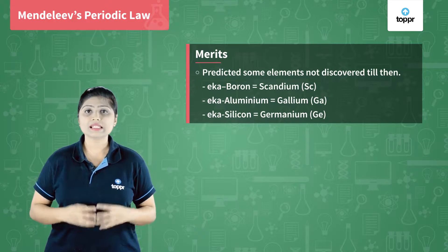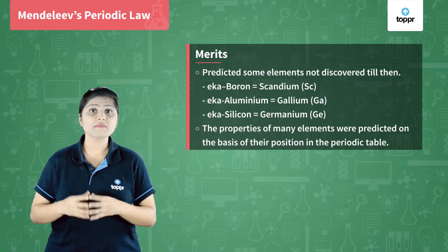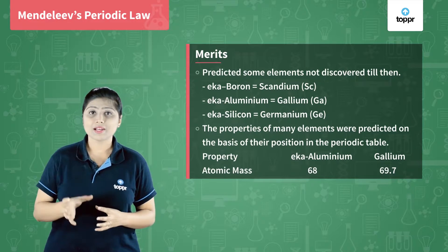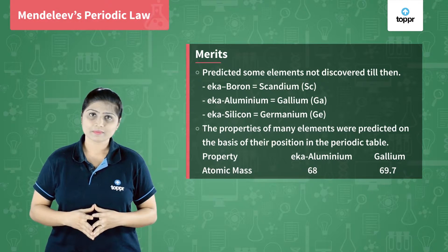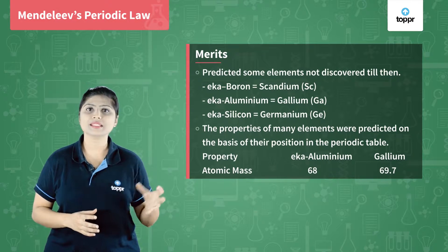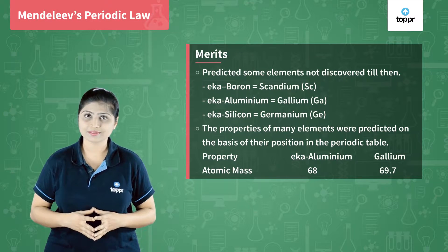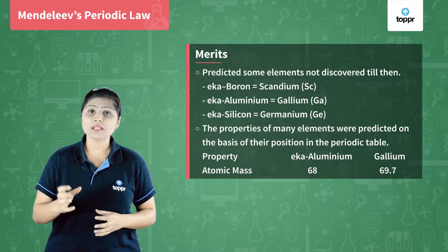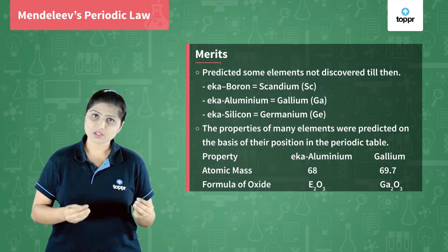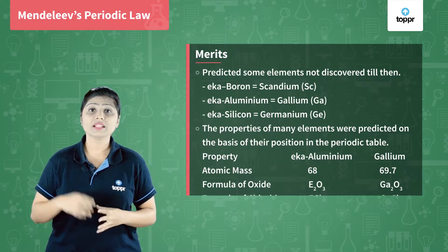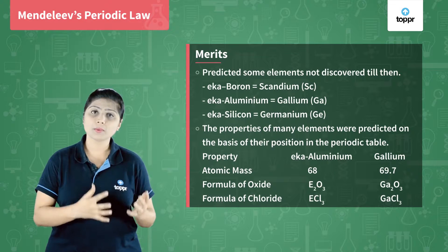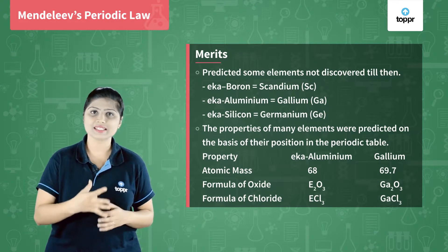Mendeleev had also predicted certain properties of these elements which are found to be very much correct. For example, the atomic mass of Eka-aluminium was predicted to be 68, and when Gallium was actually found its atomic mass was found to be 69.7, which is approximately close to the prediction. He also predicted that Eka-aluminium's formula with oxygen will be E2O3, and Gallium's formula with oxygen is actually Ga2O3. He also found that the formula of chlorine with Eka-aluminium will be ECl3, and the actual formula of Gallium with chlorine is GaCl3.